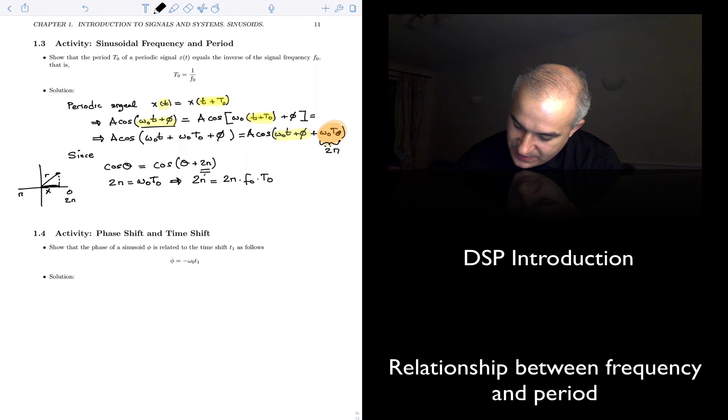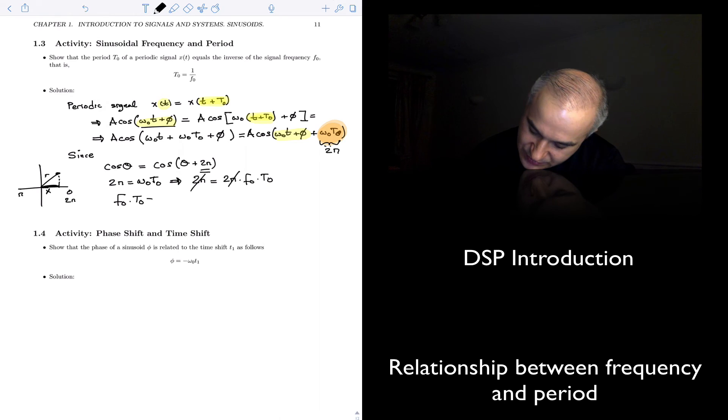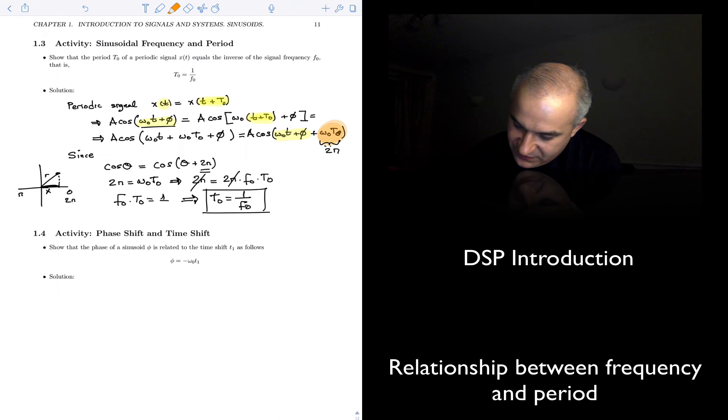The two pi and the two pi cancel, and we have f0 times t0 equals one, or the fact that one is the inverse of the other t0 equals one over f0, meaning the period is the inverse of the frequency.